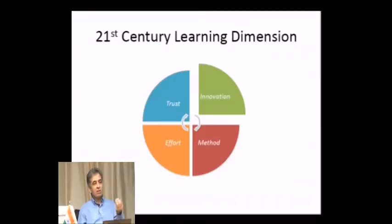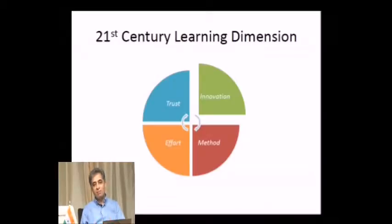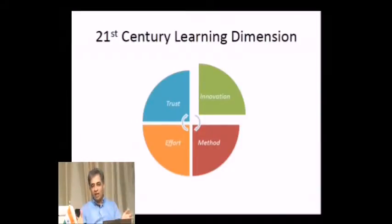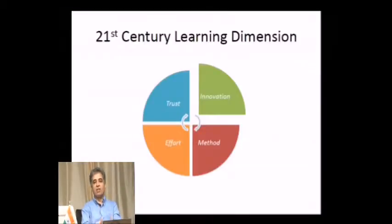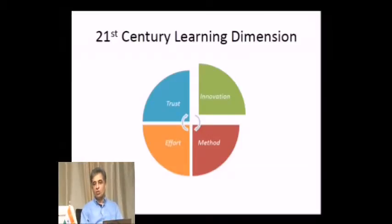Earlier the US was known for producing a lot of products; over time Japan took over, then other countries came up. Everyone is innovating because all available knowledge is being shared. Once it is shared, it gets collaborated. Once collaborated, its nature, color, and shape change, and if the environment is ideal, innovation happens. The 21st century learning dimension is innovation — it is happening everywhere.